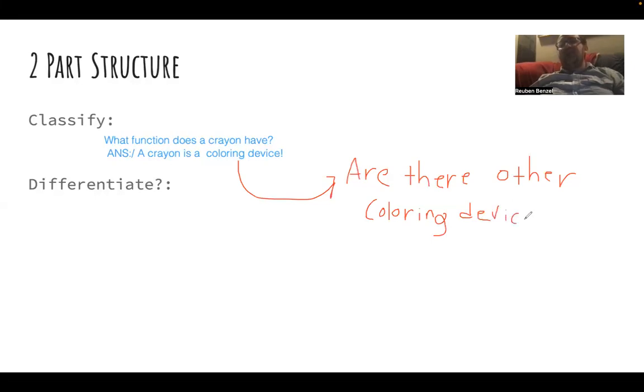So then we might want to think about what is different about a crayon compared to a marker or a colored pencil. How is it differentiated from other types of coloring devices? And then we might want to think about what is the crayon made out of.